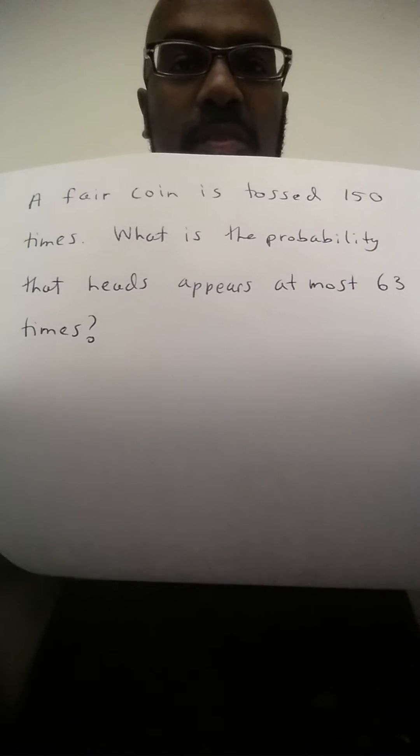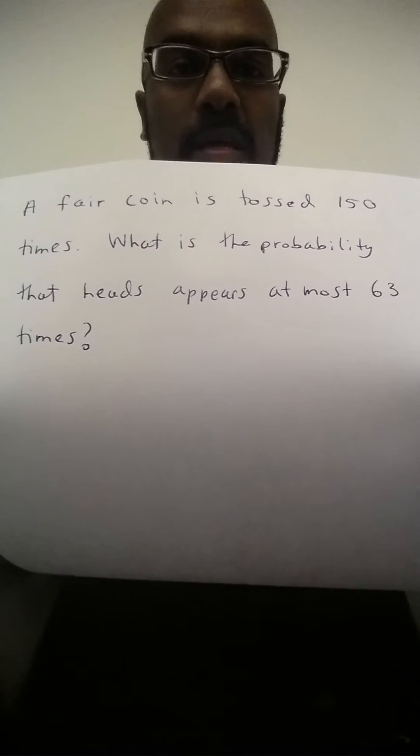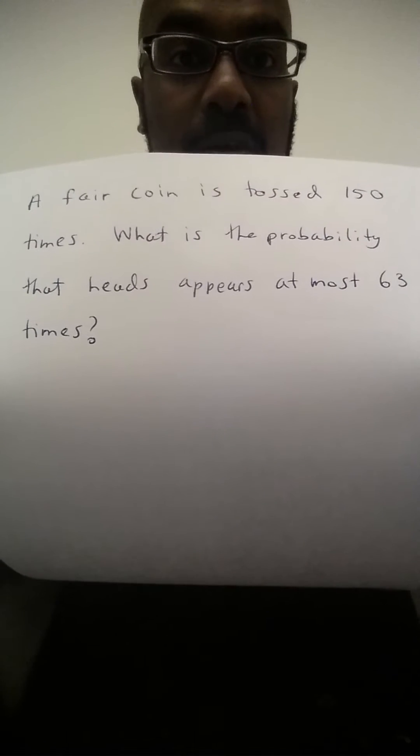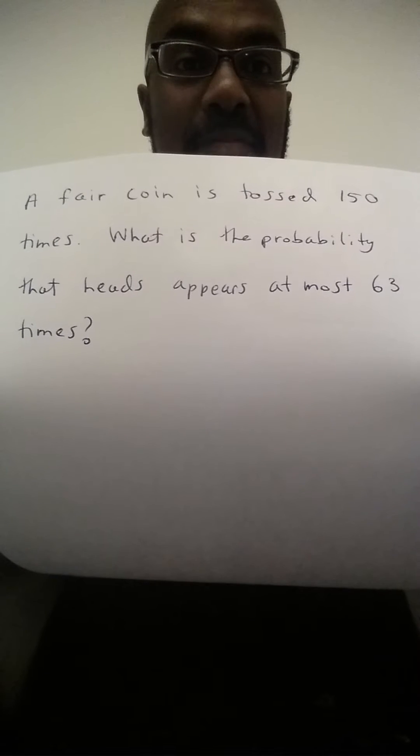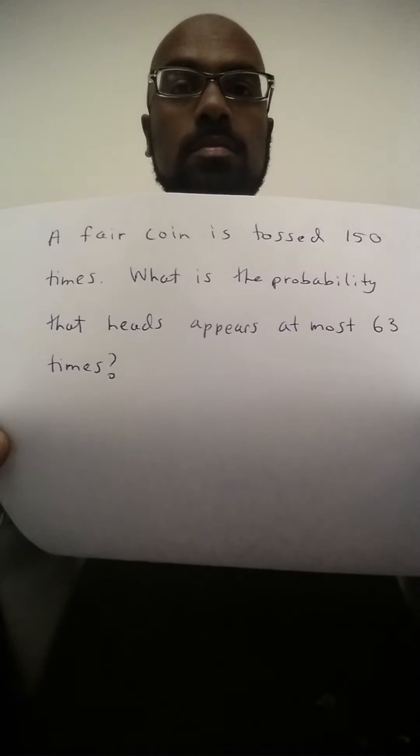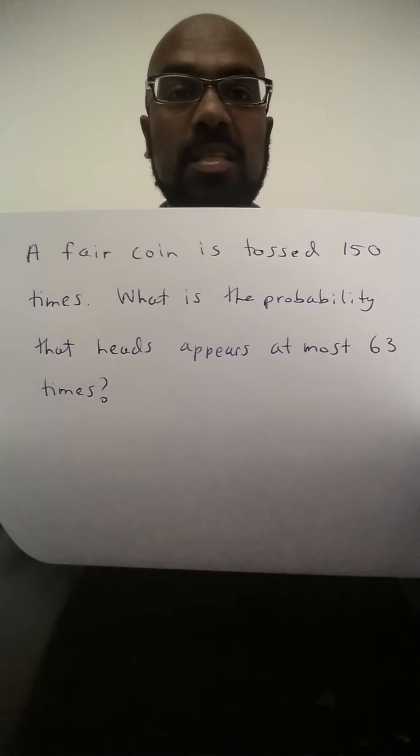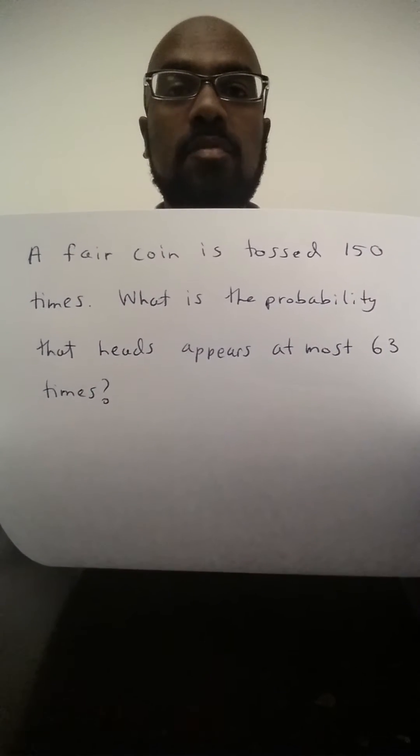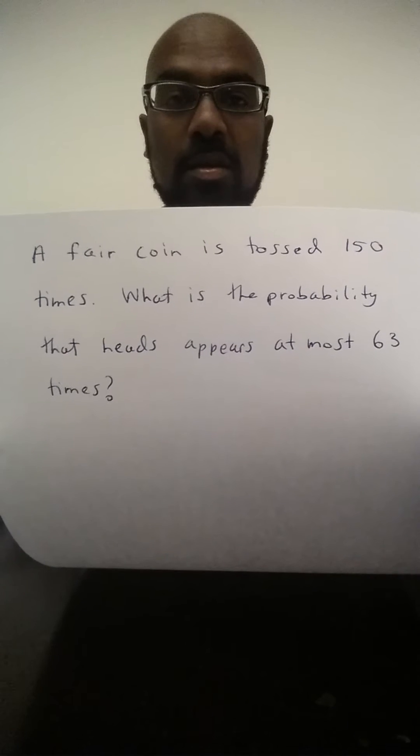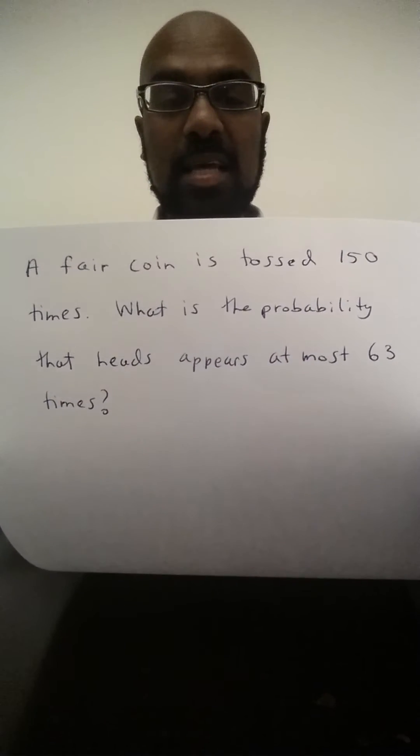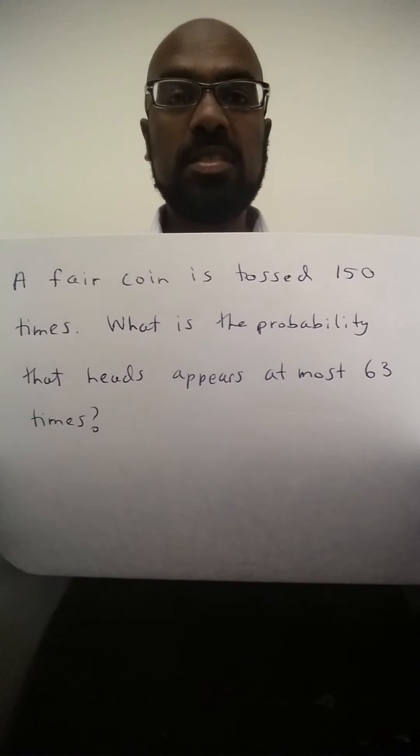Now how about a formula for the exact thing that we're interested in, the outcomes in which we have at most 63 heads. This is the sum total of the number of outcomes where there's exactly zero heads, number of outcomes where there's exactly one head, number of outcomes where there's exactly two heads, et cetera, up to 63 heads.